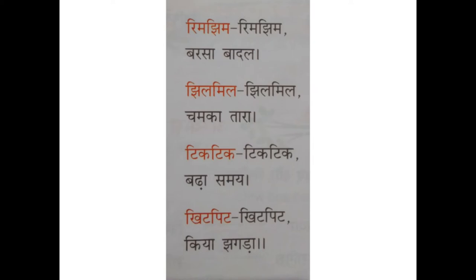This poem is full of rhyming words like 'rimjim rimjim,' 'jilmil jilmil,' 'tik tik tik,' and 'kitpit kitpit.' The poem is all about how people feel when it drizzles — how the rain comes and how the drizzling makes the world look. It's the poet's imagination. 'Rimjim rimjim' means drizzle drizzle, the rain clouds are coming, and 'jilmil jilmil' is about the flickering spark of rain, like shining stars.